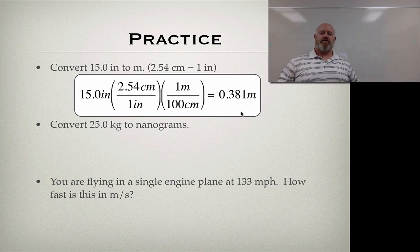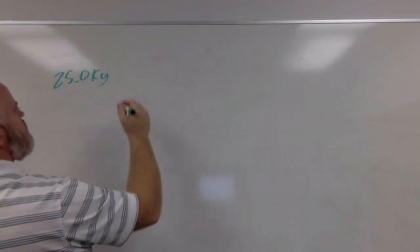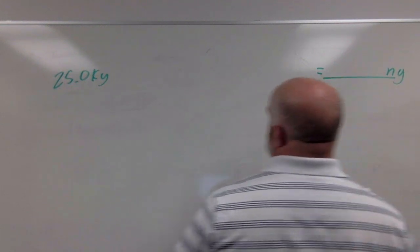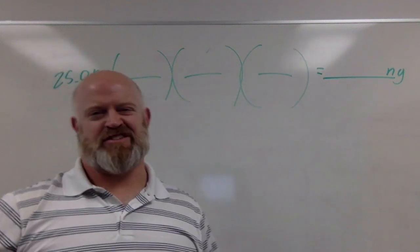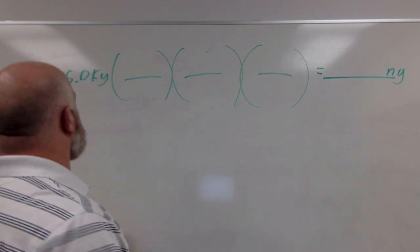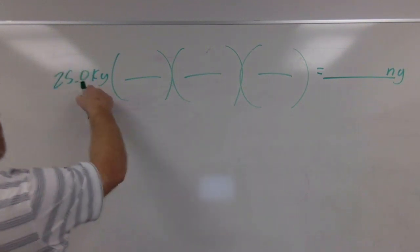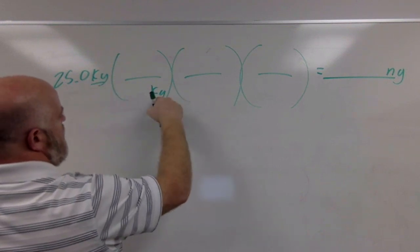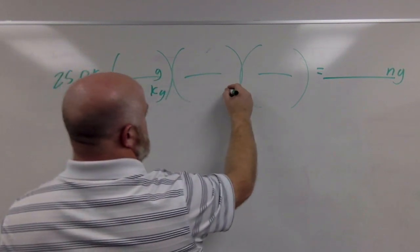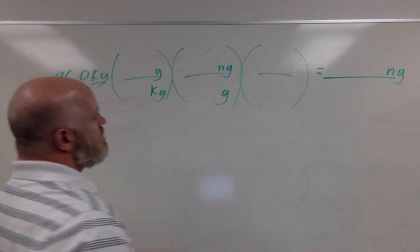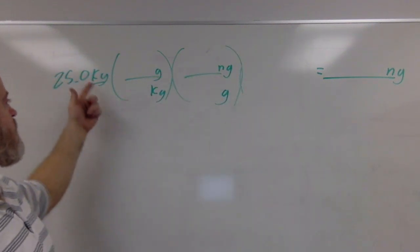Let's do another one. Now I'm going to convert 25 kilograms to nanograms. I have 25.0 kilograms and I want my answer in nanograms. I always just put three in to start. Kilograms and nanograms—you could probably do it in one step, I'm going to probably do it in two because this works better in my brain.